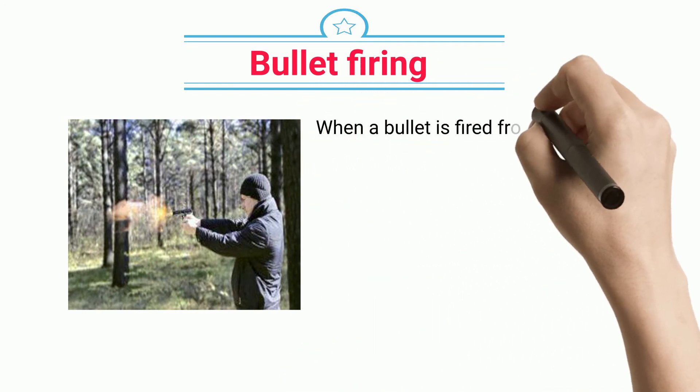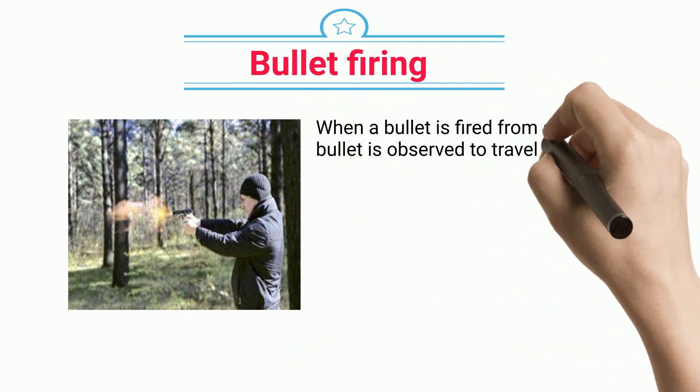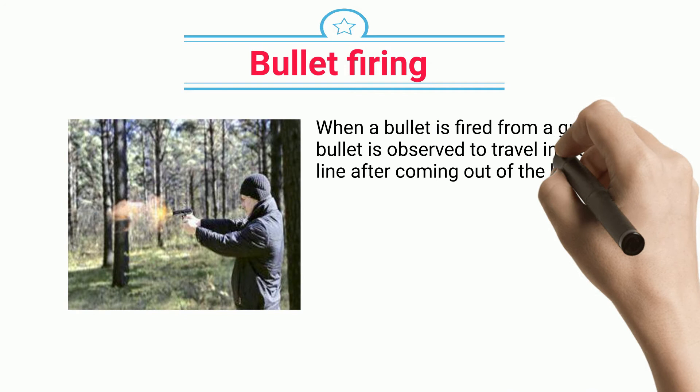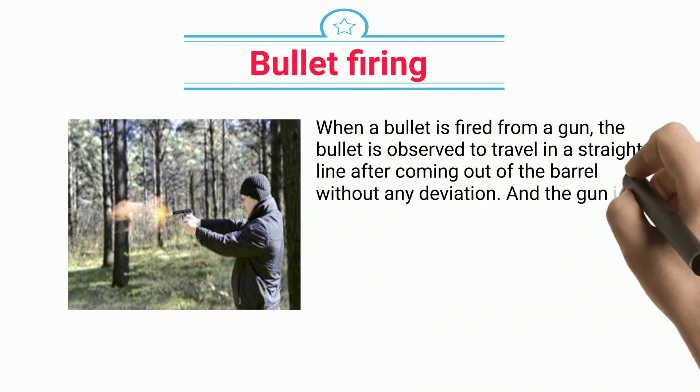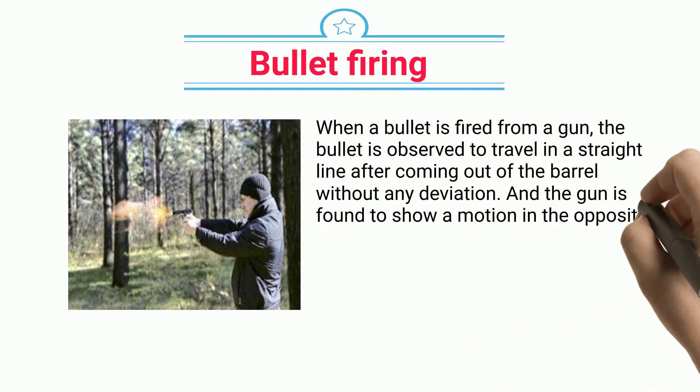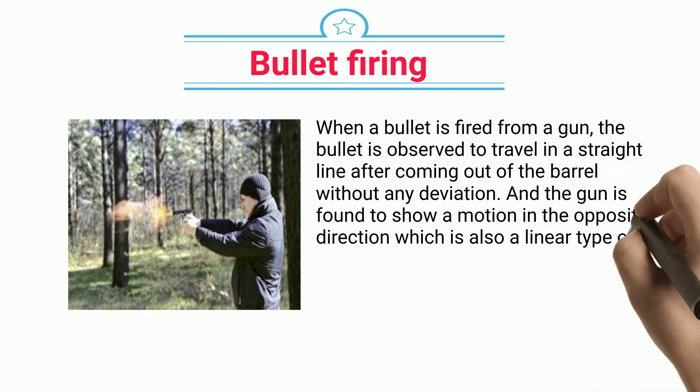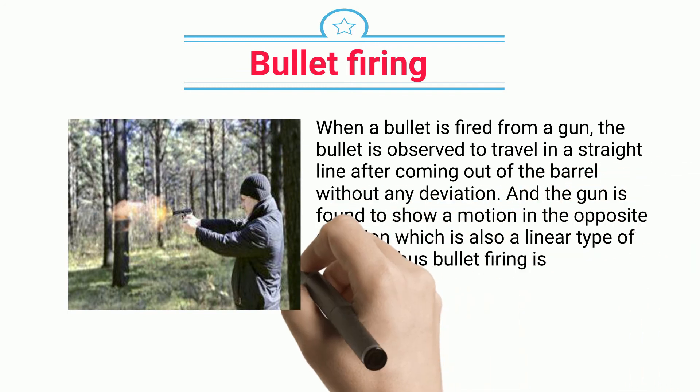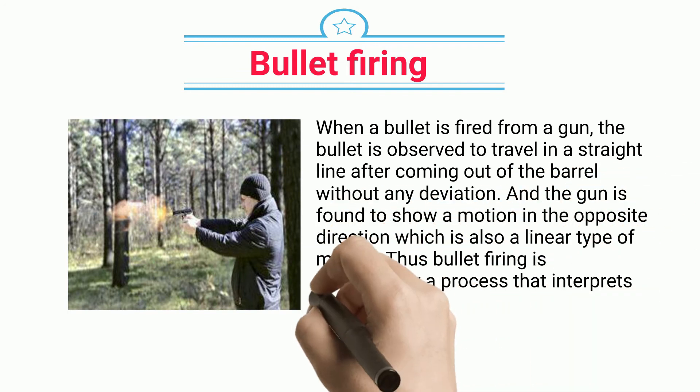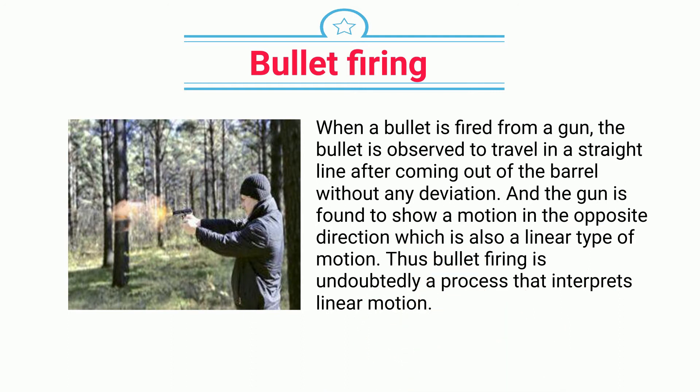Bullet firing: when a bullet is fired from a gun, the bullet is observed to travel in a straight line after coming out of the barrel without any deviation, and the gun is found to show a motion in the opposite direction, which is also a linear type of motion. Thus, bullet firing interprets linear motion.